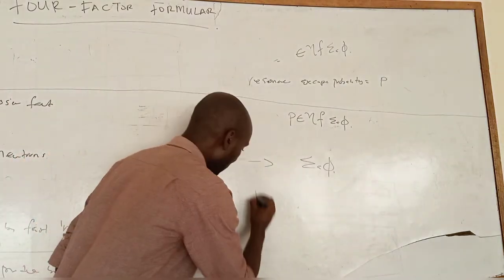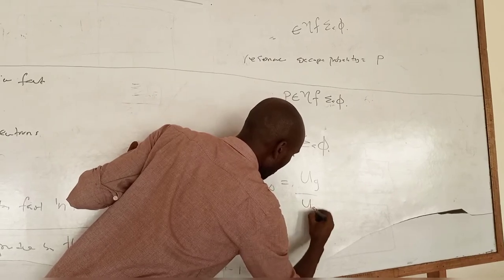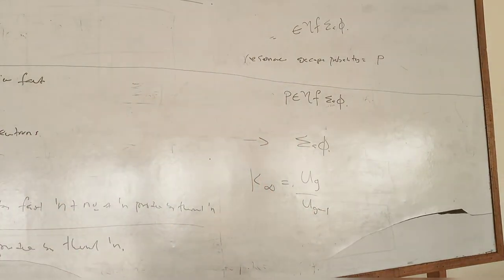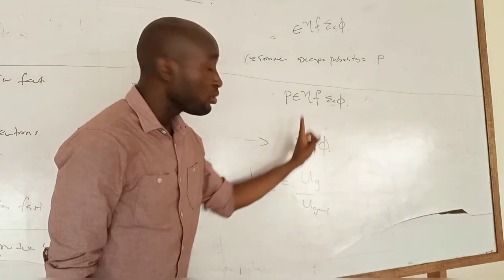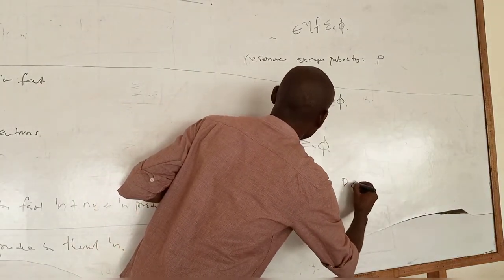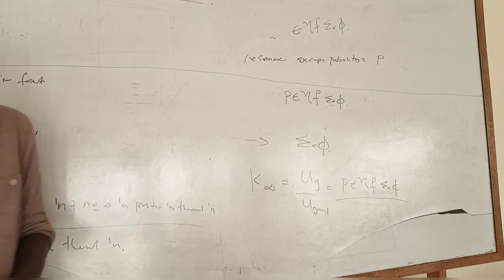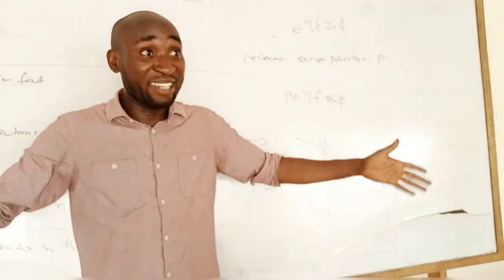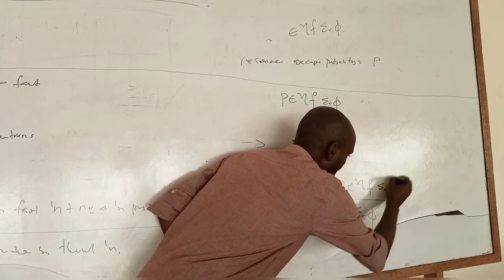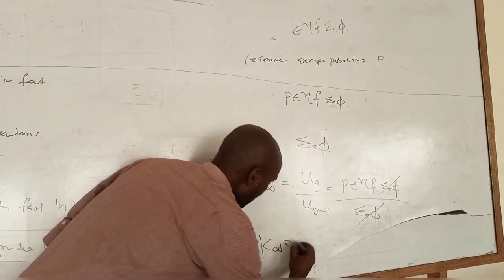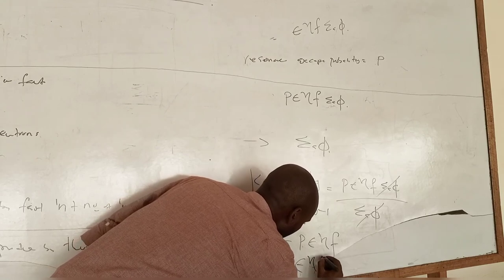Now we can calculate k-infinity. For an infinite reactor, k-infinity equals the number of neutrons in this generation over the number in the preceding generation. The number in this generation is P·ε·η·f·Σ_A·φ, and the number in the preceding generation (all absorbed, since no leakage in infinite reactor) is Σ_A·φ. Therefore, k-infinity equals η·f·ε·P — the four-factor formula.